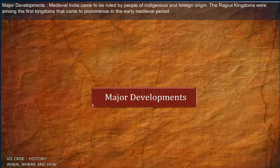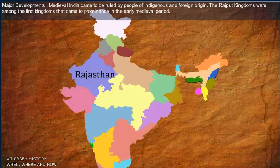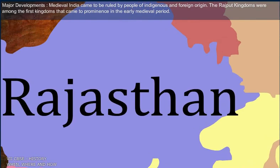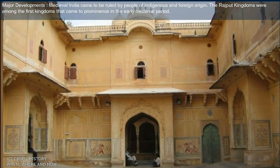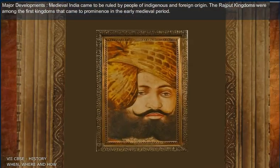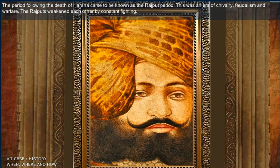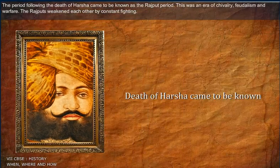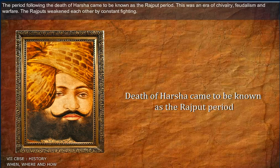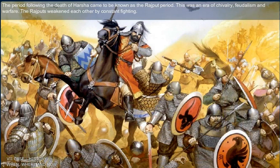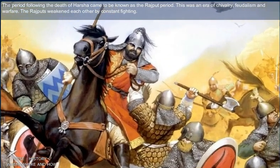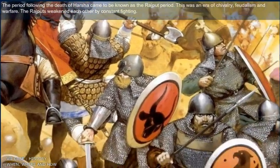Medieval India came to be ruled by people of indigenous and foreign origin. The Rajput kingdoms were among the first kingdoms that came to prominence in the early Medieval period. The period following the death of Harsha came to be known as the Rajput period. This was an era of chivalry, federalism and warfare. The Rajputs weakened each other by constant fighting.